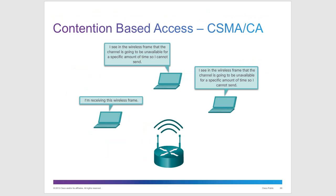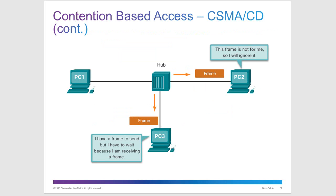Collision avoidance (CSMA/CA — Carrier Sense Multiple Access with Collision Avoidance) is used with wireless. Here you actually monitor the channel and send only when it's confirmed available. Collision detection: if you're not receiving, you can send, and if there's a collision, you detect and retry. Collision avoidance: you monitor the line and send only when the channel is confirmed free.